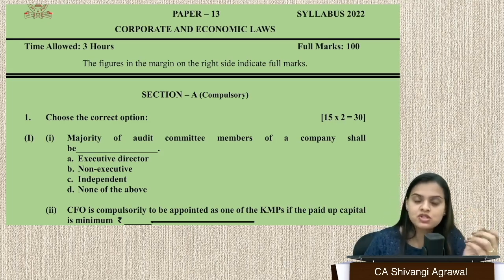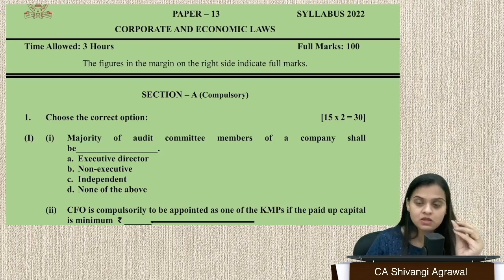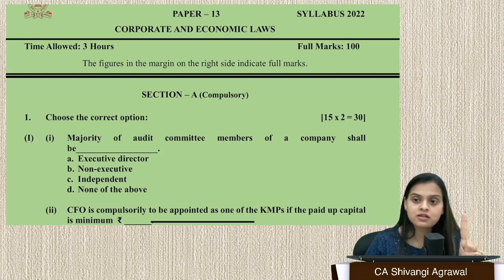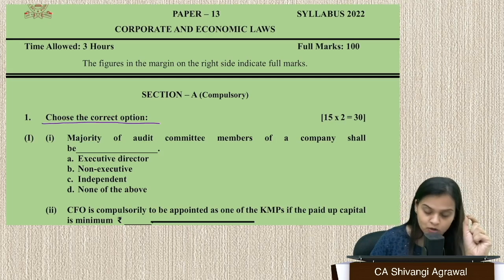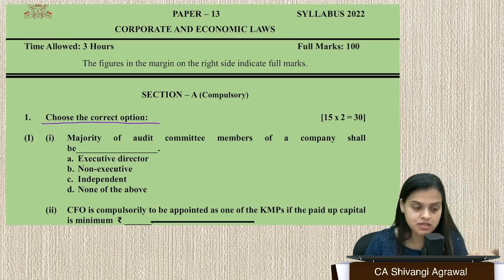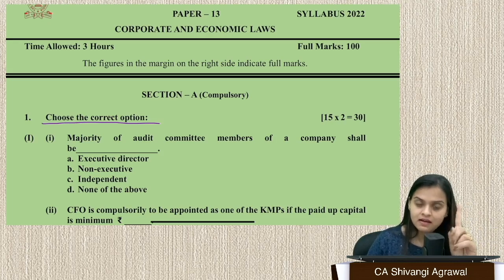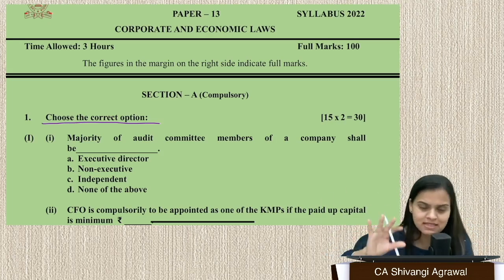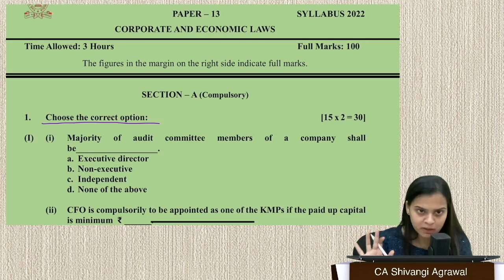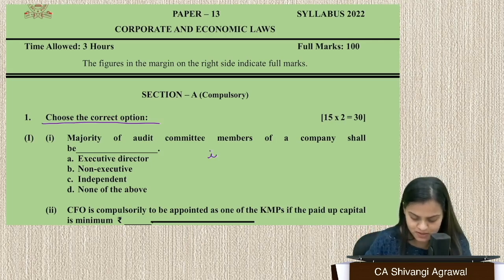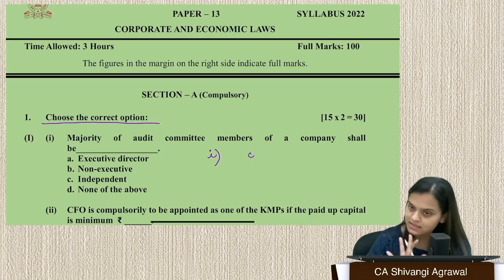We have Section A, which is compulsory, consisting of 15 MCQs — including case-based MCQs — each carrying two marks. The first question that comes to mind is: it says 'choose the correct option' — there's nowhere written that you have to write a justification. My genuine advice is to just write the option letter, for example 'C', and leave one line gap before writing the next answer.